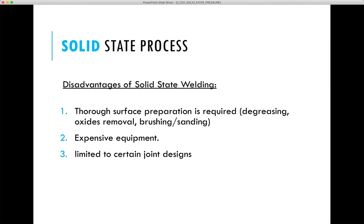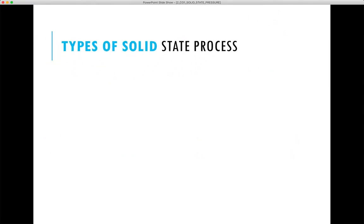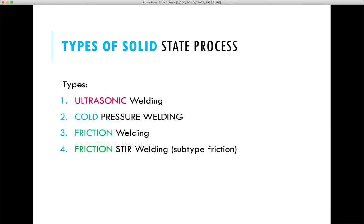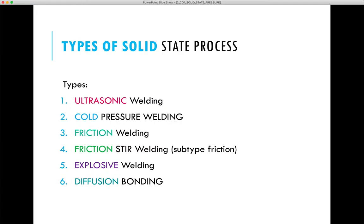Now we are going to move to the ultrasonic welding process. Looking at the types of solid state welding processes: the first is ultrasonic, then cold pressure welding, then friction welding. Friction stir welding is basically a subtype of friction welding. Then explosion welding, and the last one is diffusion bonding. We are going to cover all of these welding processes step by step, starting with ultrasonic welding.